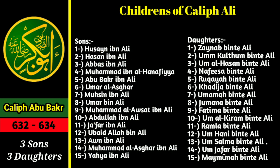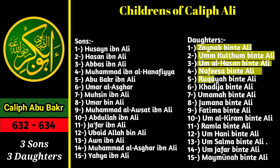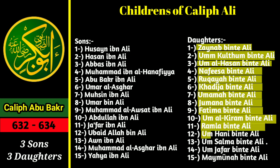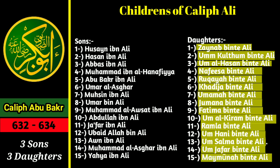And his daughters' names are: Zainab binti Ali, Um-Kultham binti Ali, Um-Al-Hasan binti Ali, Nafisa binti Ali, Rukaya binti Ali, Khadija binti Ali, Umama binti Ali, Jumana binti Ali, Fatima binti Ali, Um-Al-Kiram binti Ali, Ramla binti Ali, Um-Hani binti Ali, Um-Salma binti Ali, Um-Jafar binti Ali, and Maimuna binti Ali.